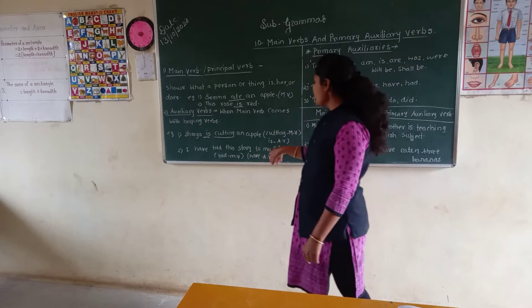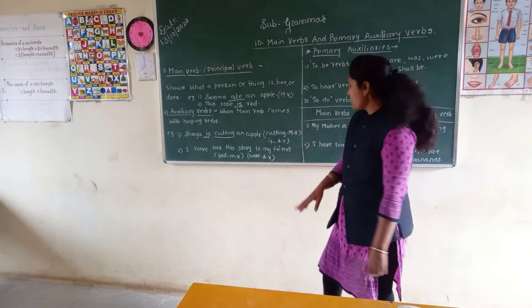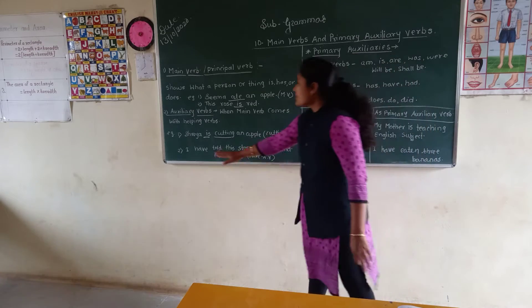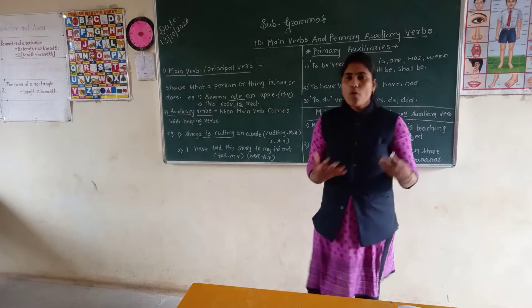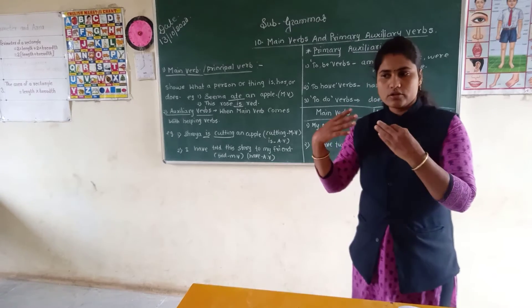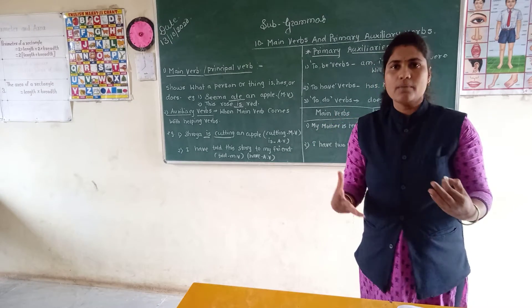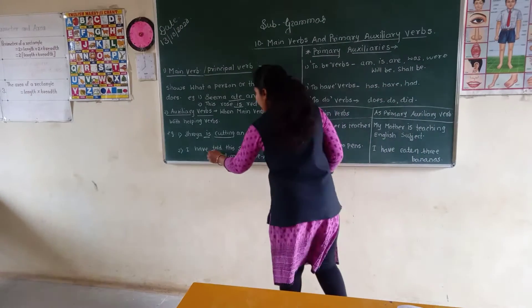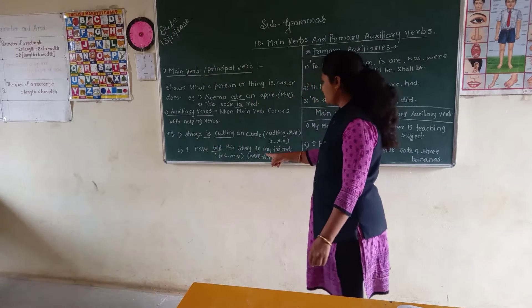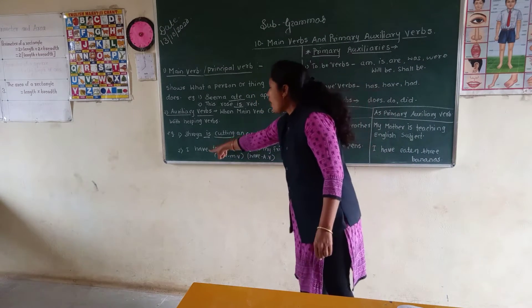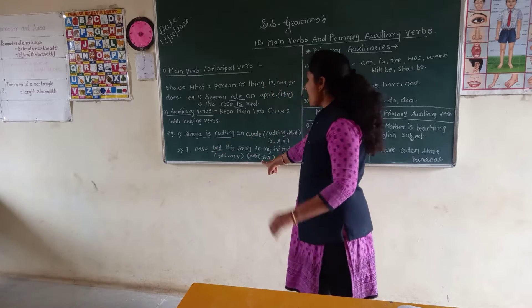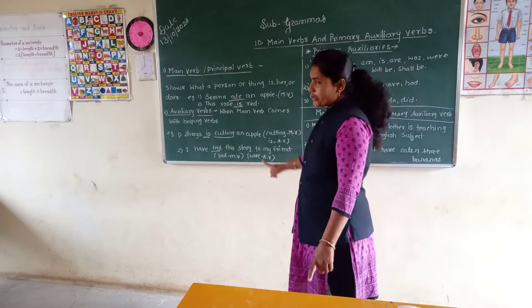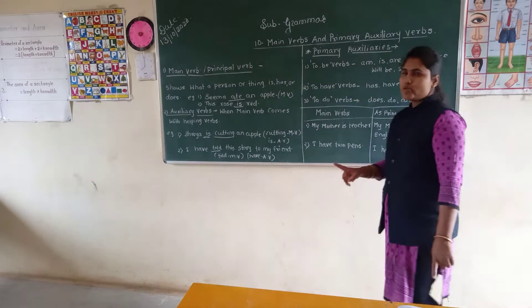Now, second sentence: 'I have told this story to my friend.' What is the main verb here? 'Told' — the action is telling the story. That's why 'told' will become the main verb. And 'have' is the helping word, so 'have' is the auxiliary verb. Don't be confused about that.